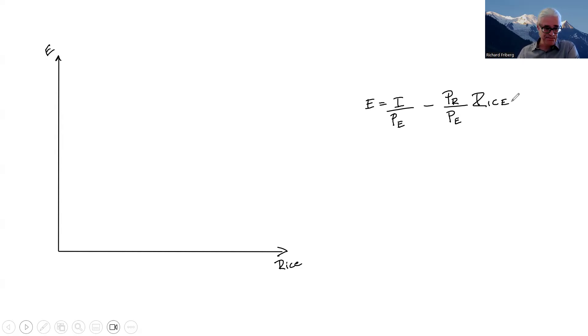Let's illustrate the budget constraint and the chosen bundle. We have a budget constraint like this. We have a chosen bundle where the budget constraint is tangent to the indifference curve. The slope here is PR over PE.